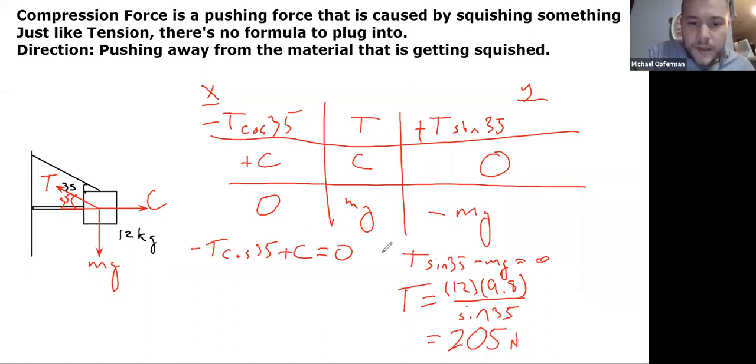And then we can plug that result back over here. So minus 205 cosine 35 equals minus C. So C equals the answer I just got times cosine of 35, which is 168 newtons. And that's all there is to doing compression forces. You just use the standard F equals ma procedure and put in the compression forces as pushing forces. And that's it.